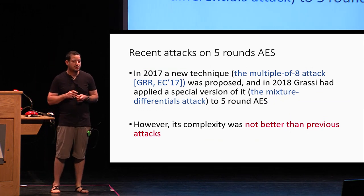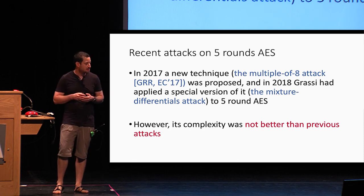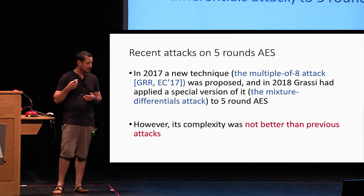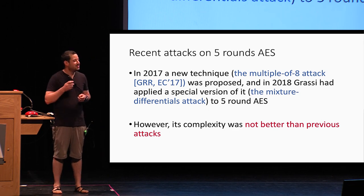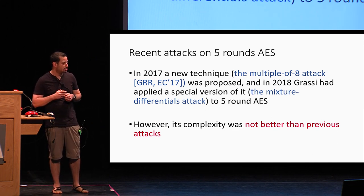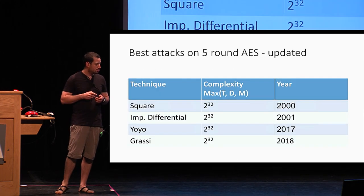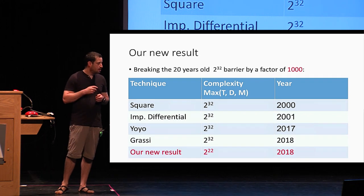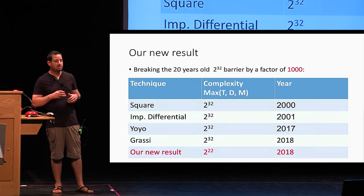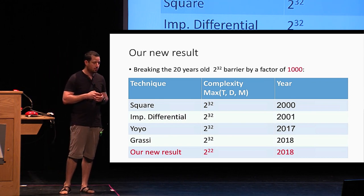Recently, at Eurocrypt 2017, Grassi et al. proposed a new cryptanalysis technique they call the multiple-of-eight attack. And very recently, Grassi applied a special version of it — which we call the mixture differential attack — to five-round AES. However, its complexity was not better than previous attacks, so we are still at the 2^32 barrier. In our work, we were able to break this 20-year-old barrier by a factor of more than 1,000, to get around 2^22 complexity.